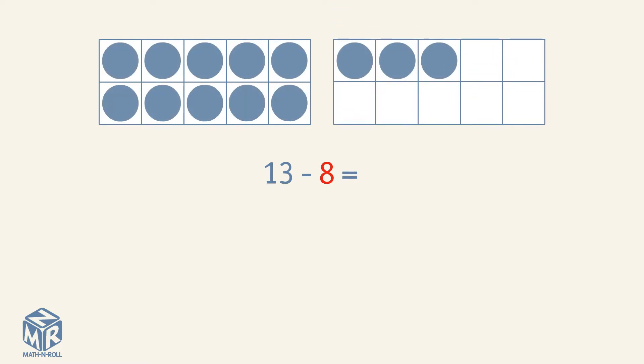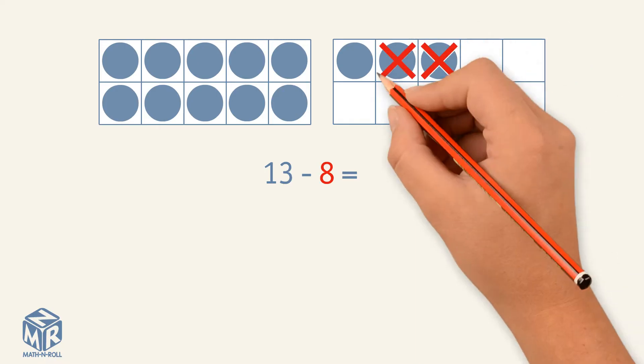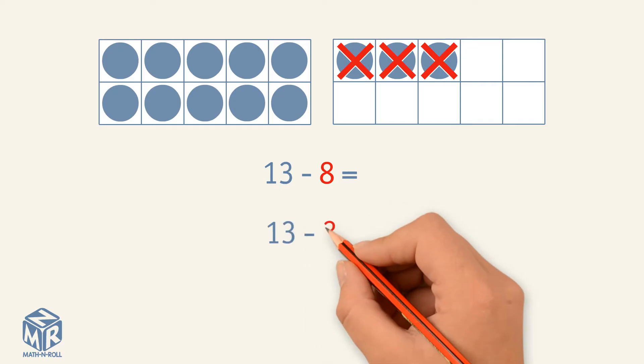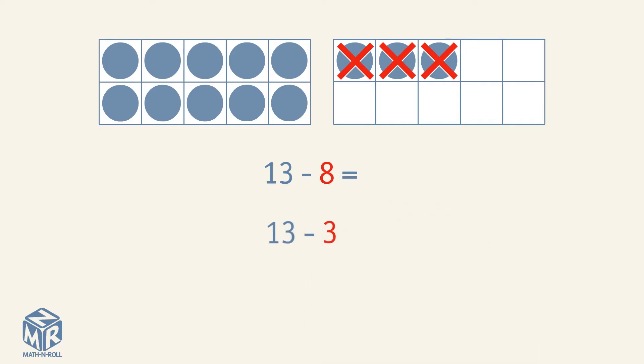How many counters do we subtract to get to 10? We subtract 3 counters to get to 10. How many more to subtract 8? We subtract 5 more.